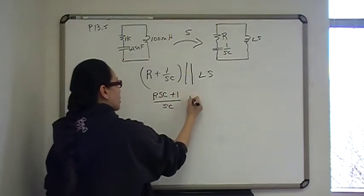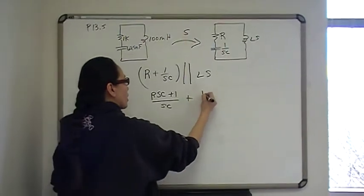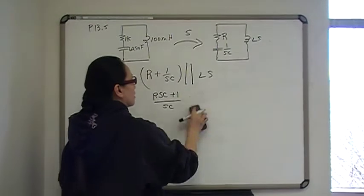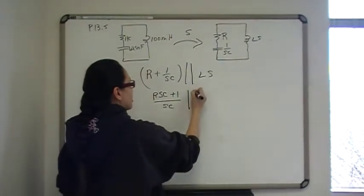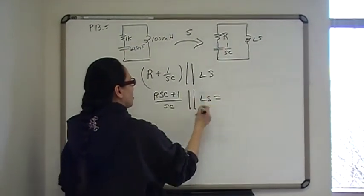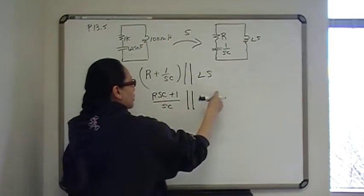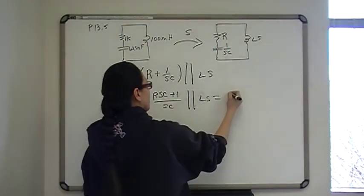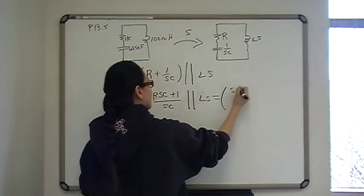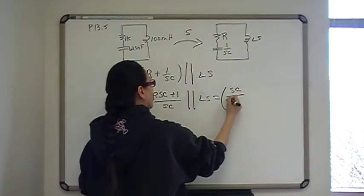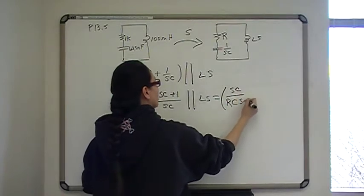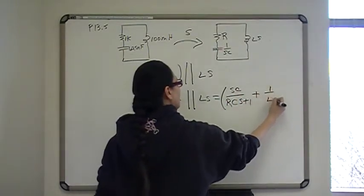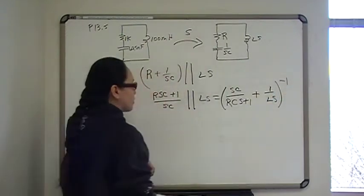And so the equivalent impedance is going to be 1 over LS. So that's in parallel with LS, and that's going to be the reciprocal, and then the sum of the reciprocals and the inverse of that. So that's going to be SC over RCS plus 1, and then plus the reciprocal of the other. And once those are combined, the inverse of that.